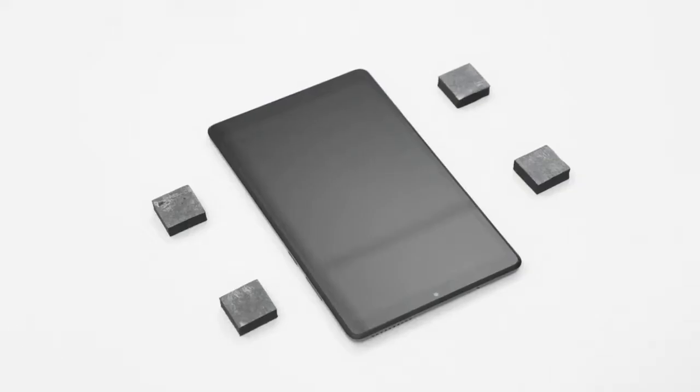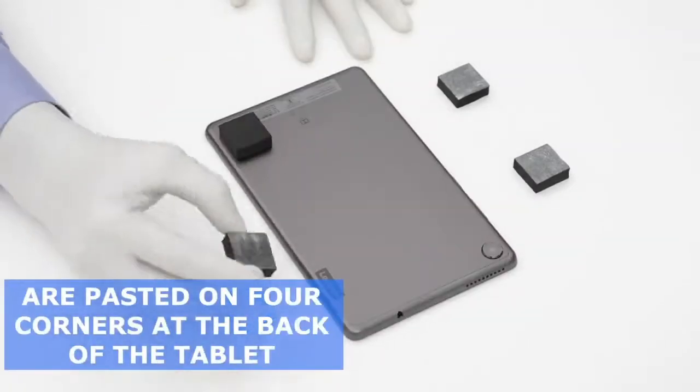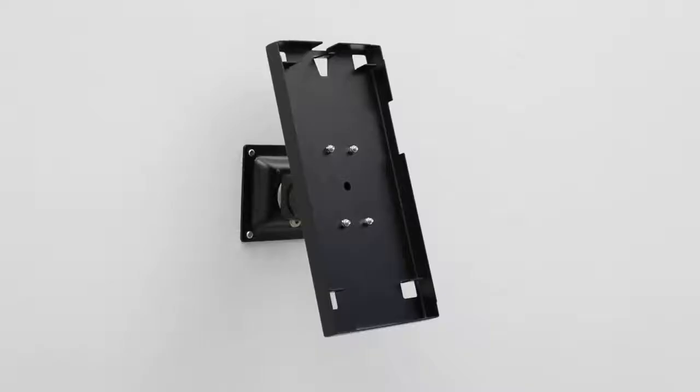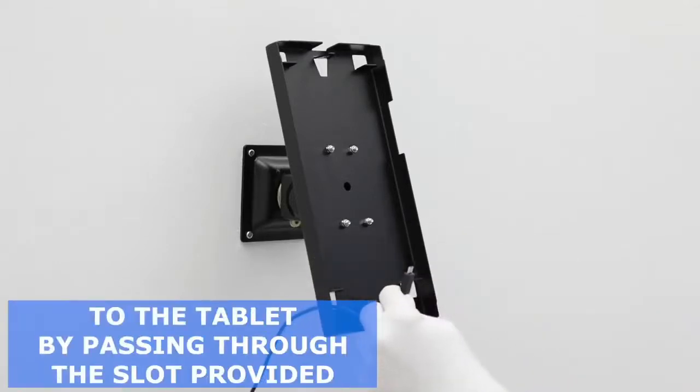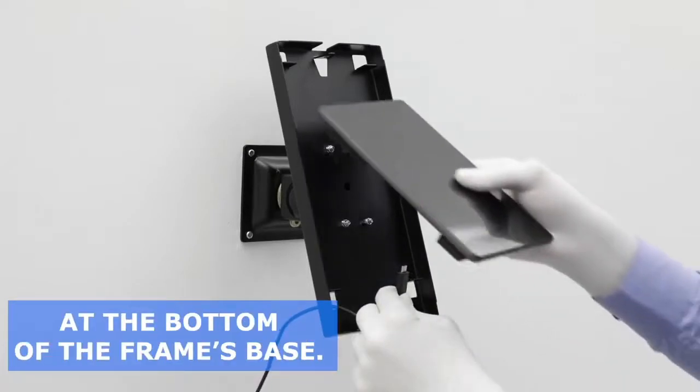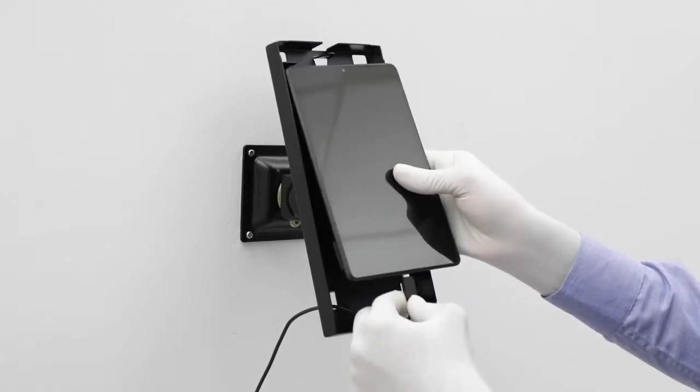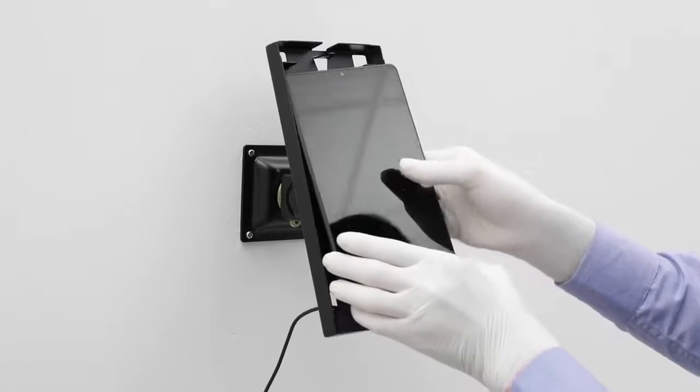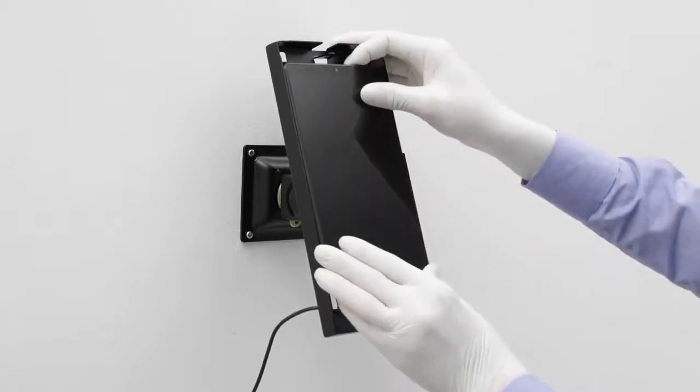Step 12: Foam pads, double-sided, are pasted on four corners at the back of the tablet for right fitting inside the frame. Step 13: Connect the micro-USB side of the charging USB cable to the tablet by passing through the slot provided at the bottom of the frame's base. Keep in mind that the charging USB cable can pass through the left or right-sided slot at the bottom of the frame's base depending upon the availability of power socket on either side.